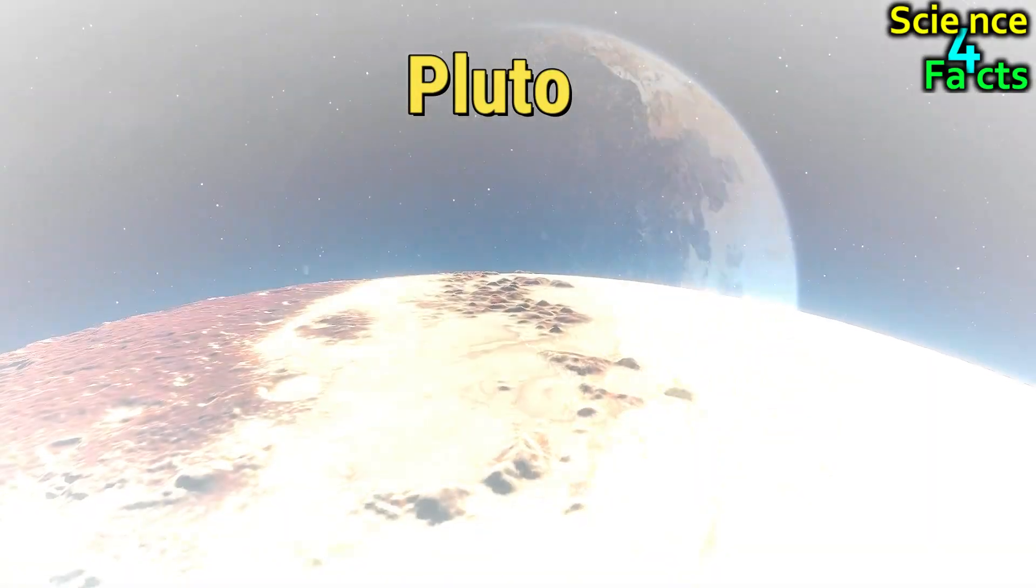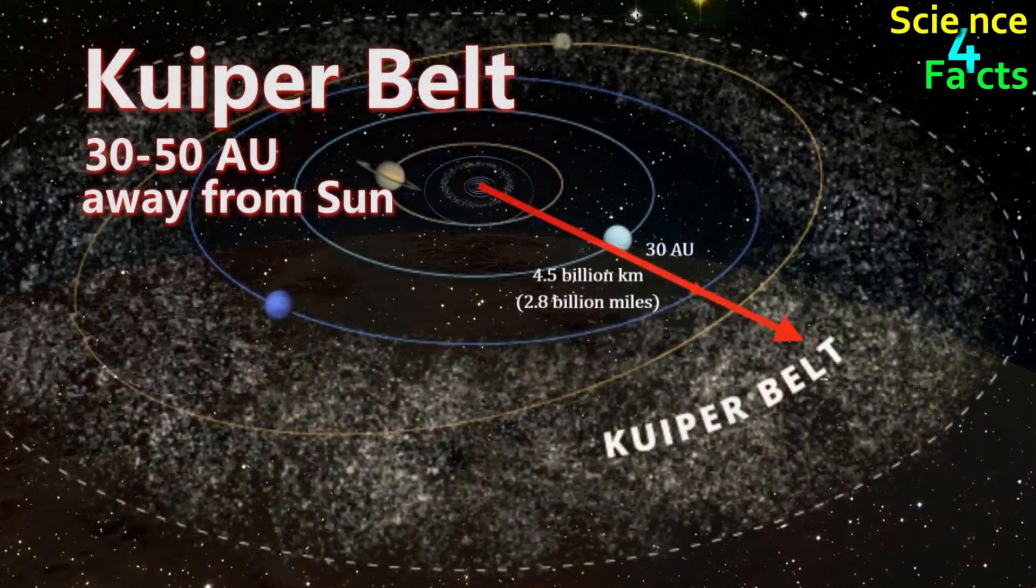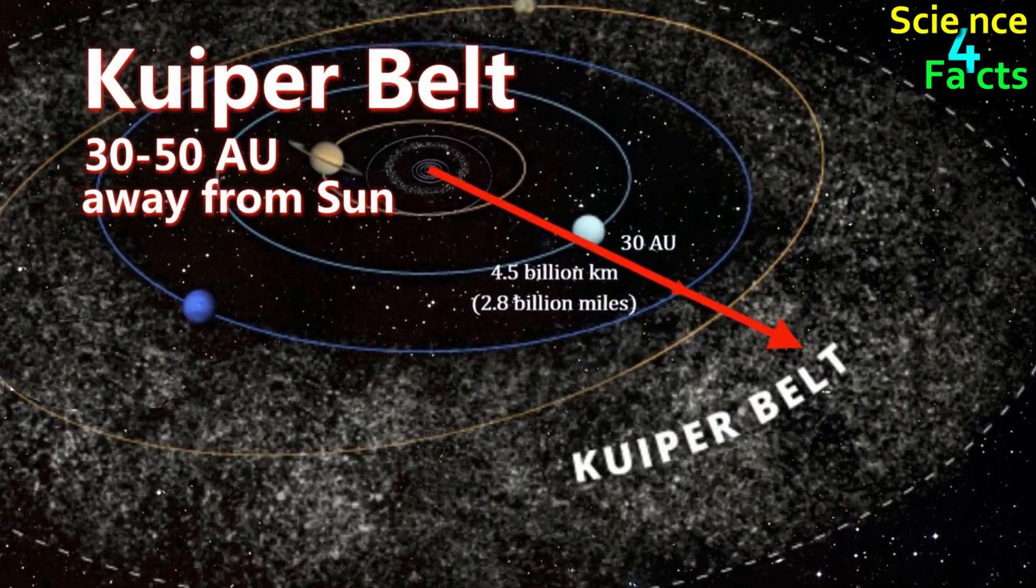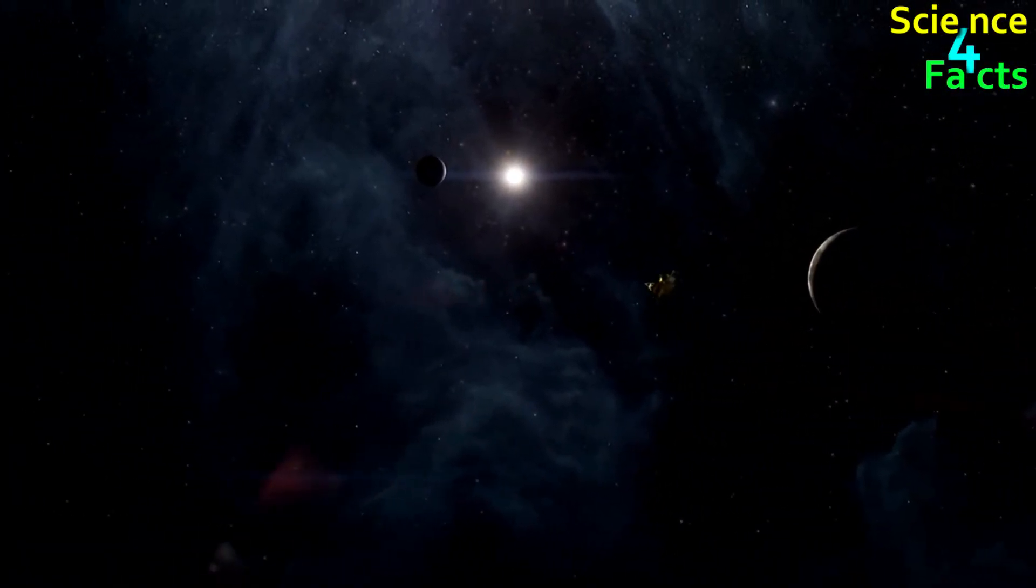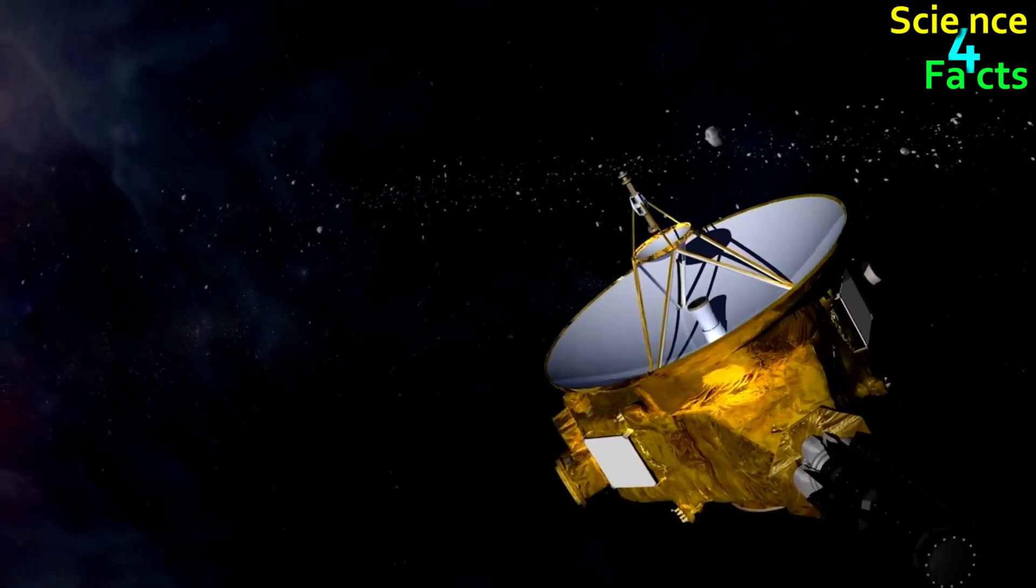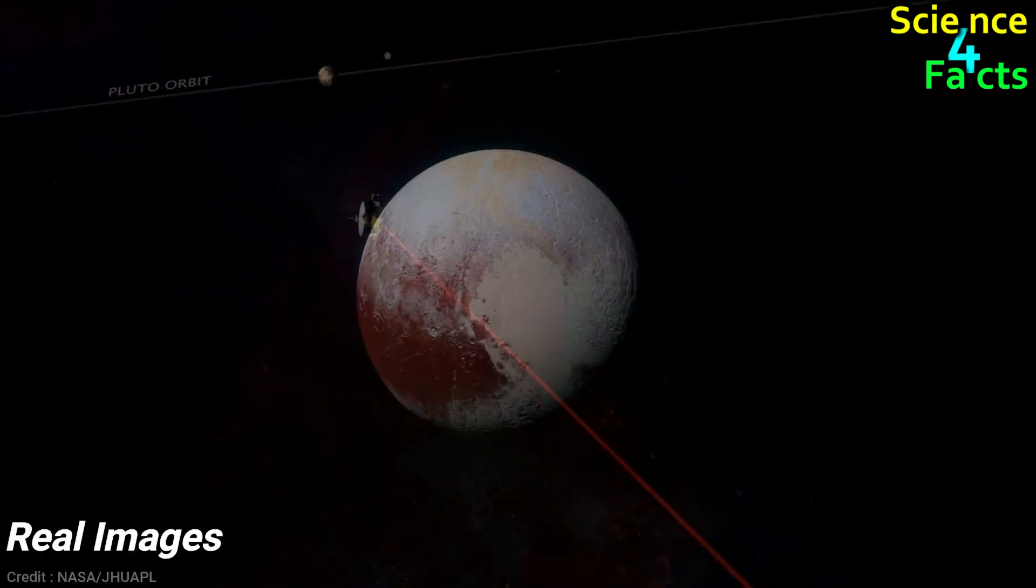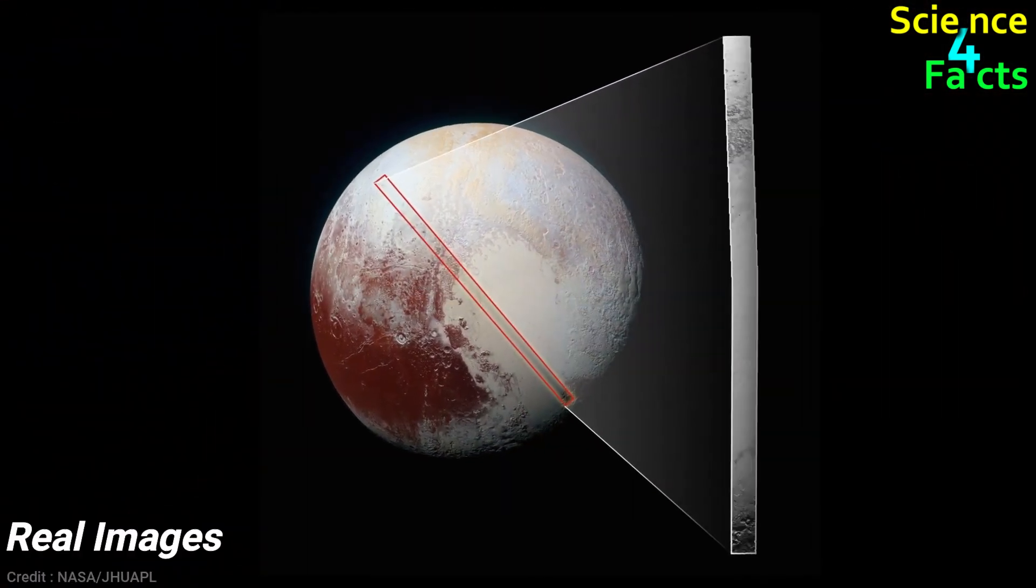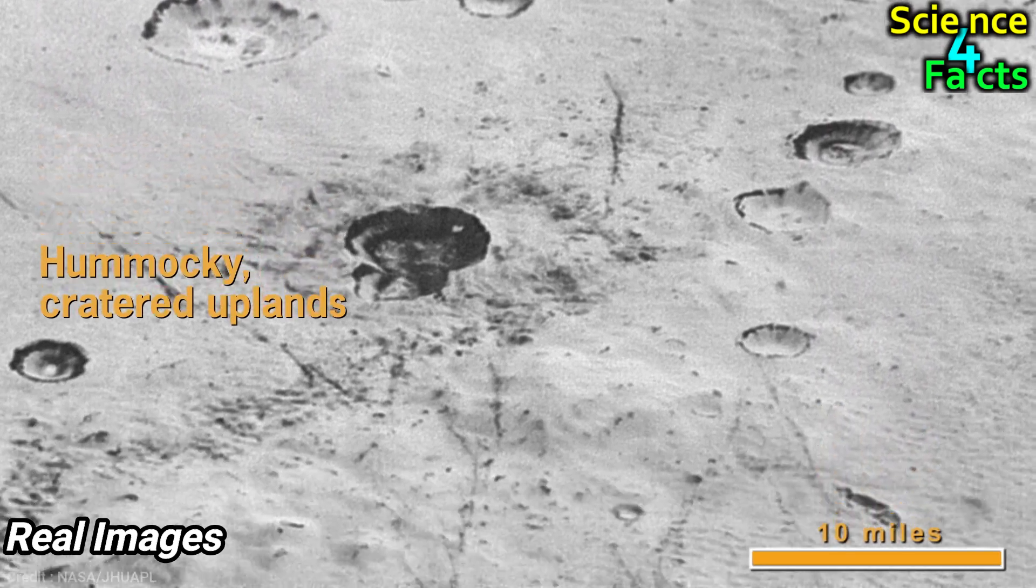Pluto is the smallest dwarf planet in our solar system and is located in the Kuiper Belt, a region beyond the orbit of Neptune that contains many icy bodies. In 2015, NASA's New Horizons spacecraft performed a flyby of Pluto, providing us with the first close-up images of the dwarf planet. From these images, we learned that Pluto has a solid surface that is primarily composed of ices, including nitrogen, methane, and carbon monoxide.